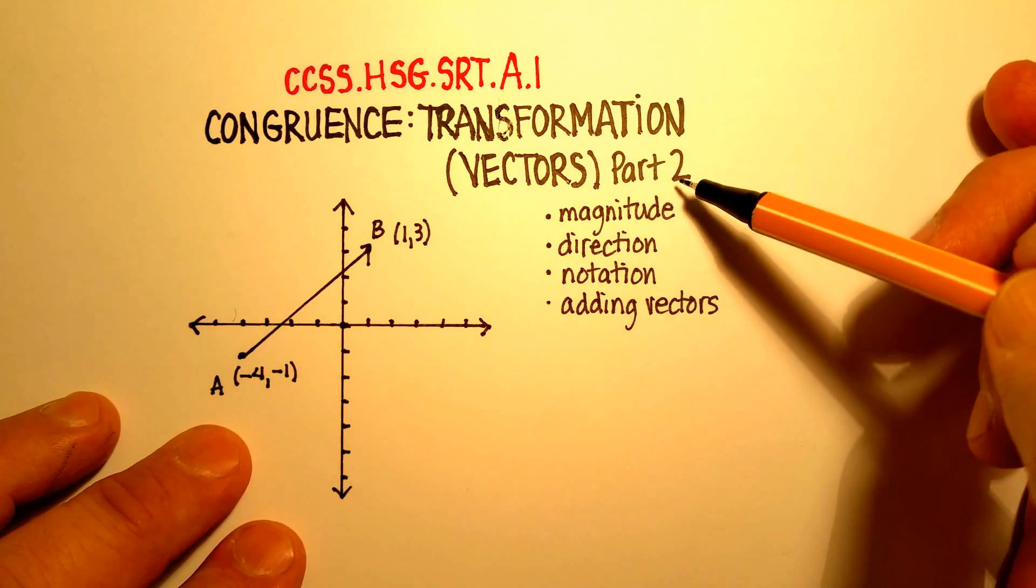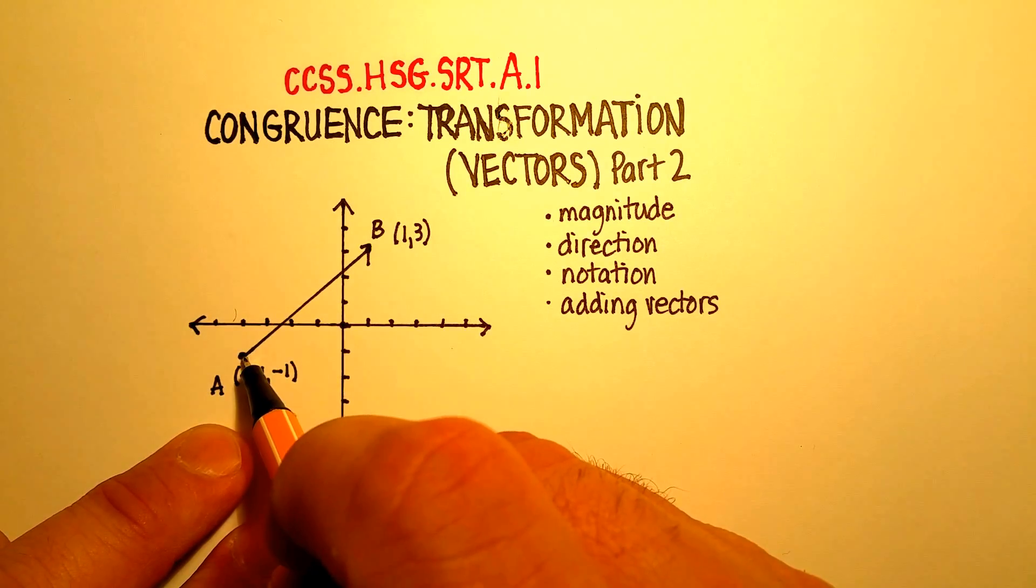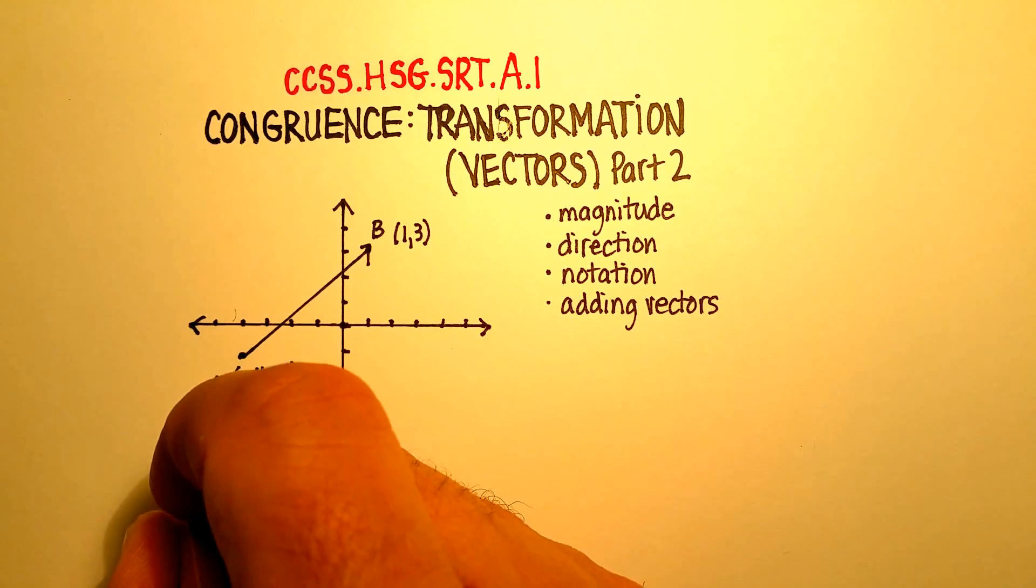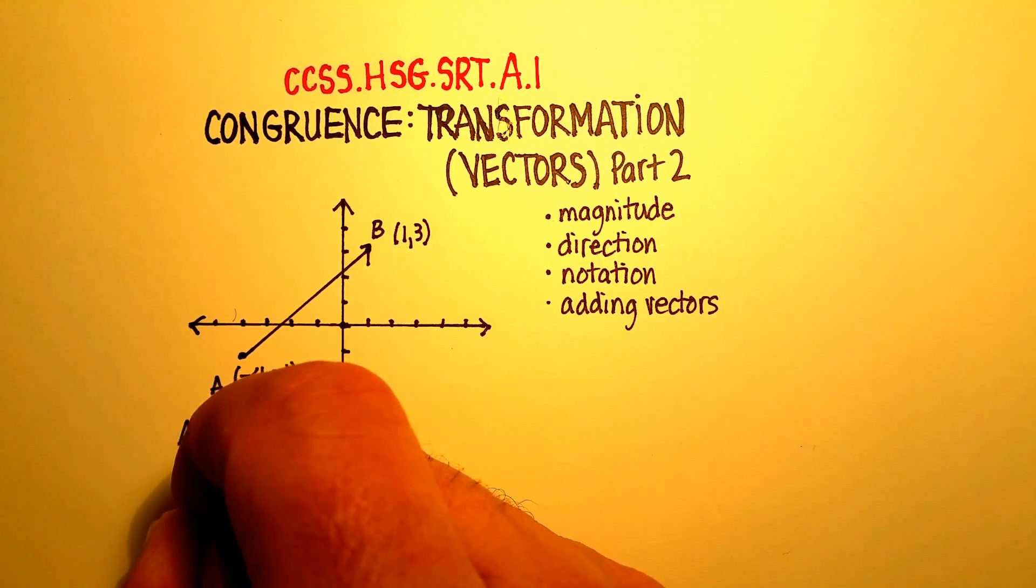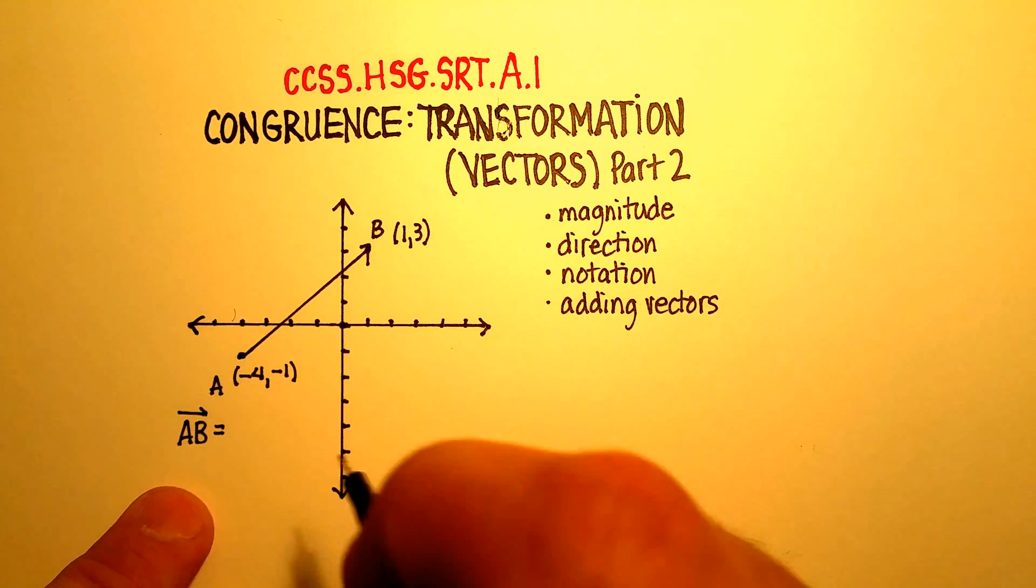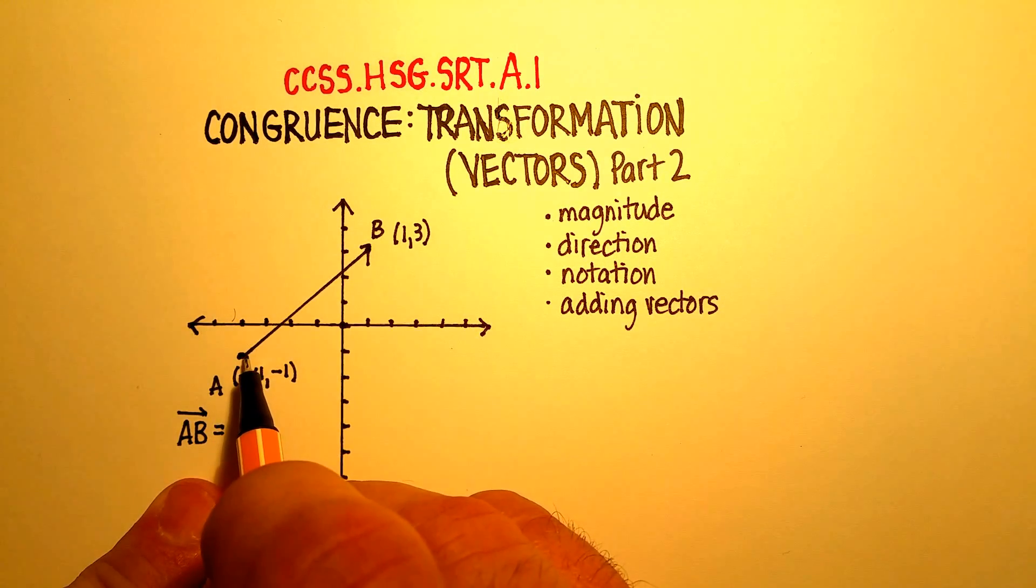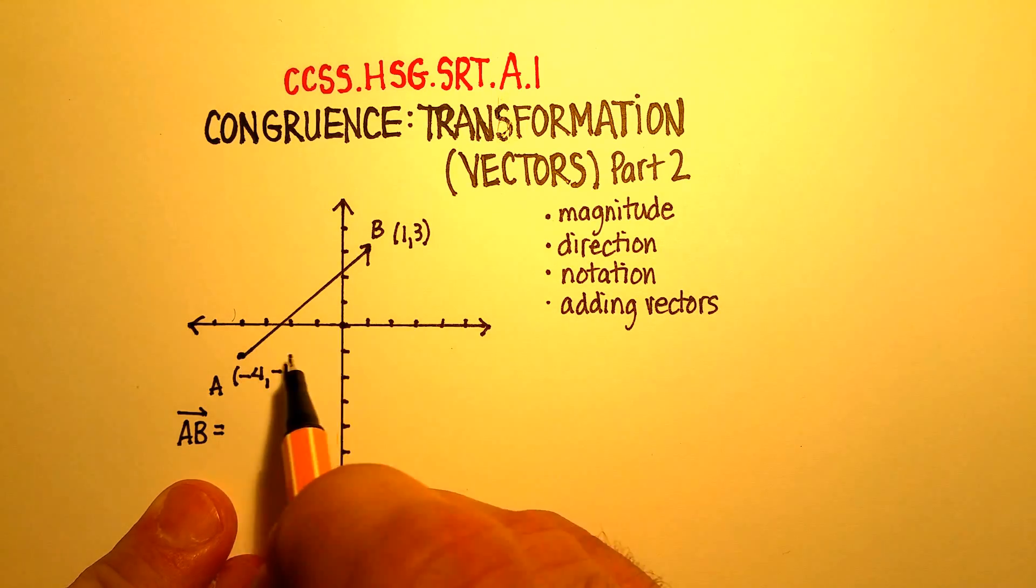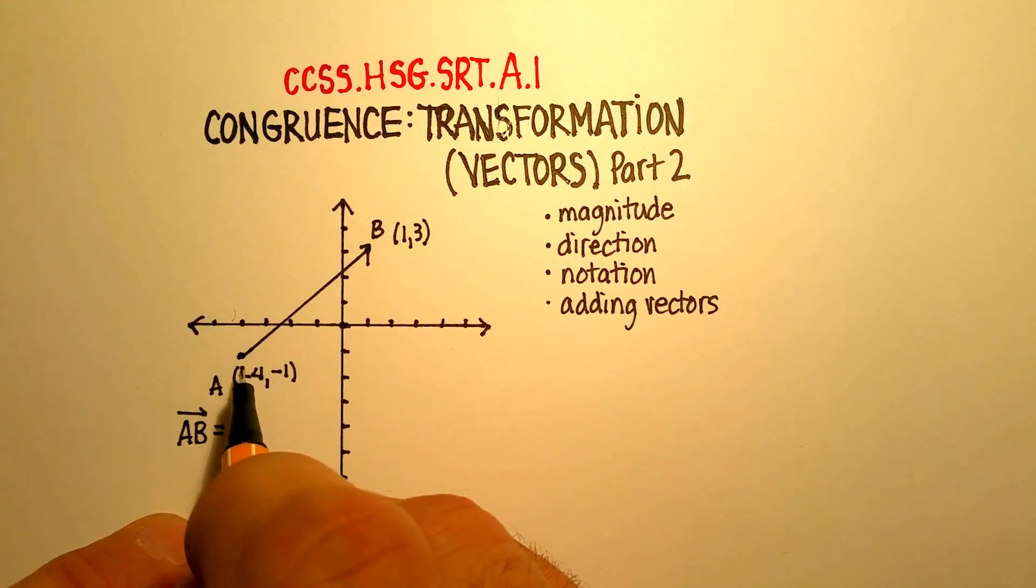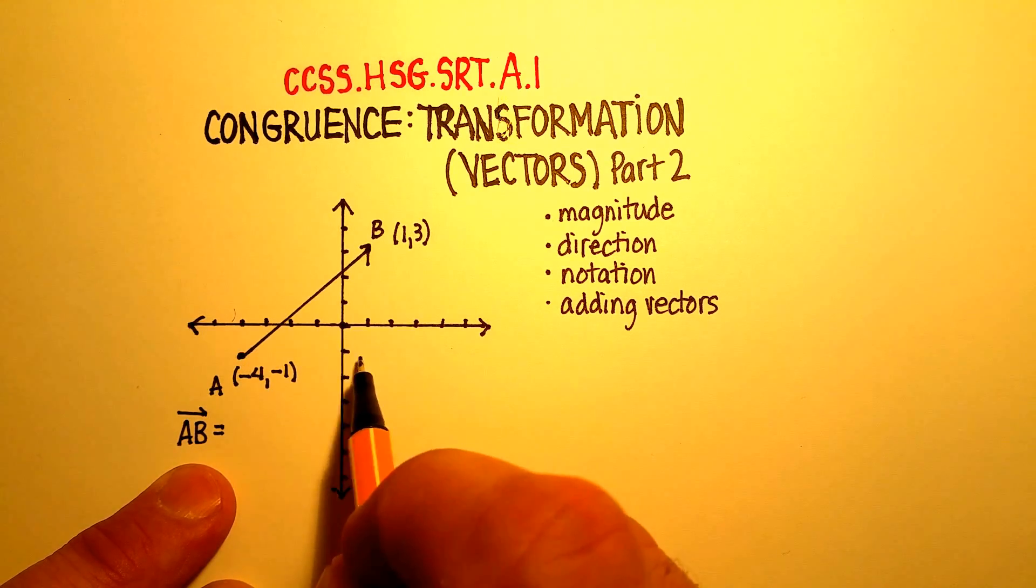Now remember from video part one, vectors part one, we talked about the different parts of a vector and we talked about this being the initial point, this being the terminal point, and that we would draw a vector the same way that you would draw, for example, a ray. So you would say that would indicate that that's a vector AB. And we talked about the component form of a vector. And the component form basically was you had to indicate what the horizontal component was and what the vertical component was. So let's do that.